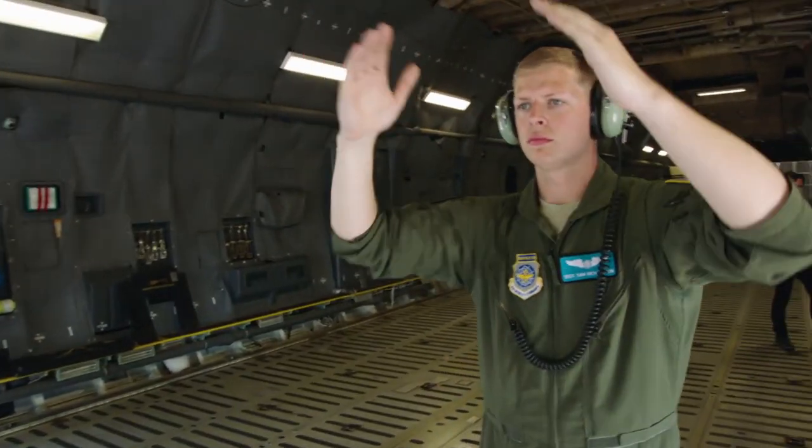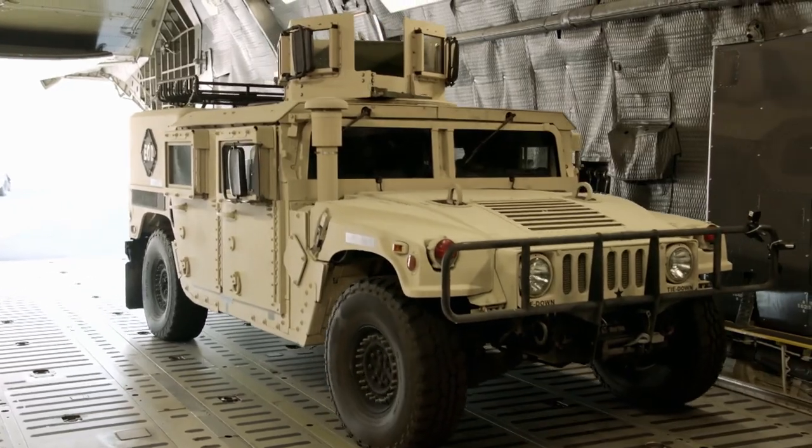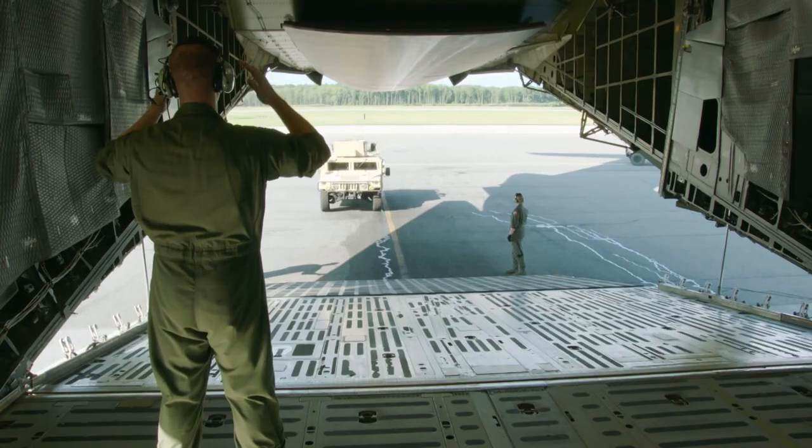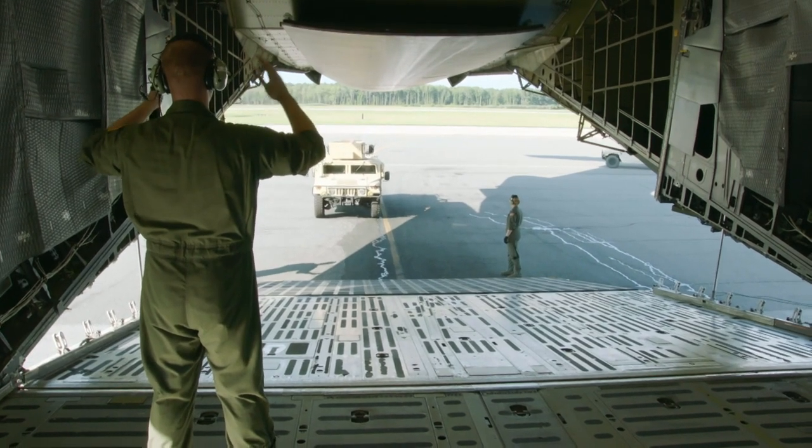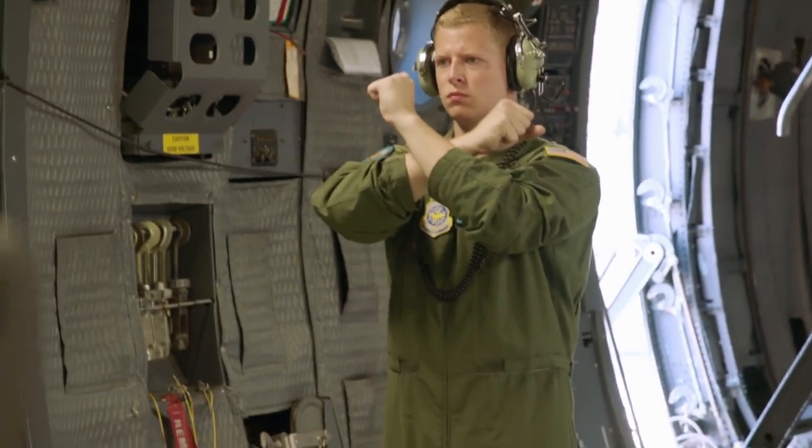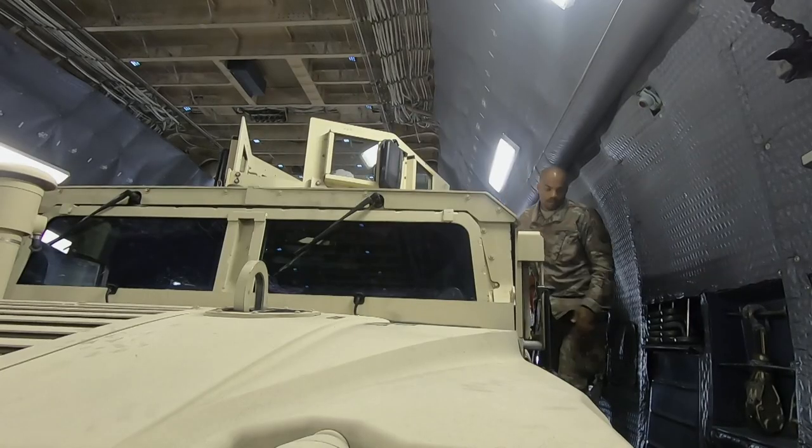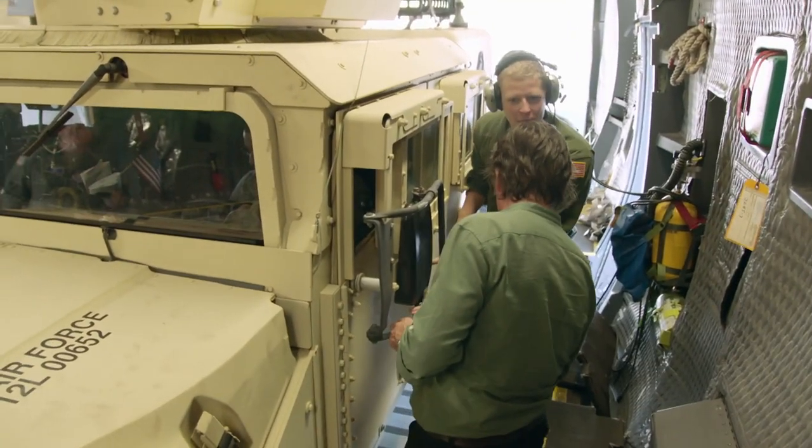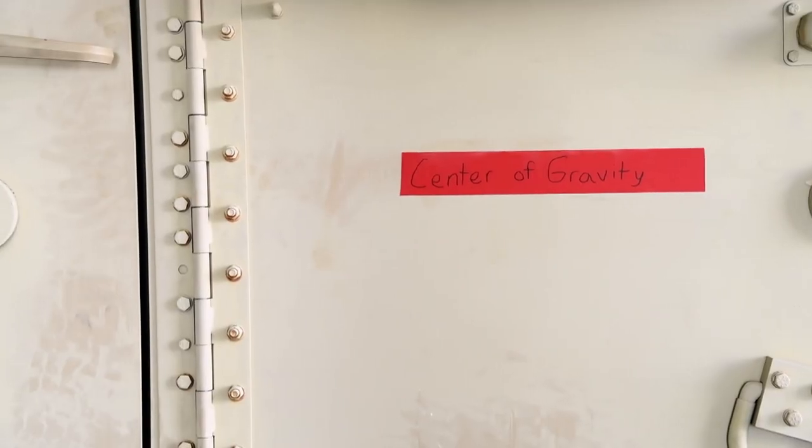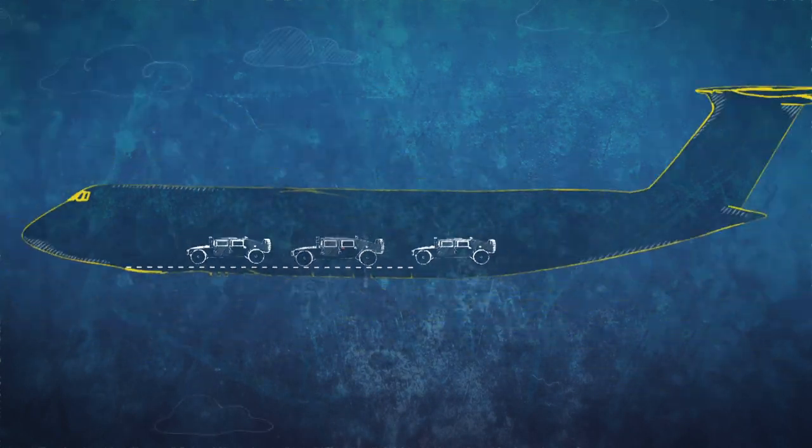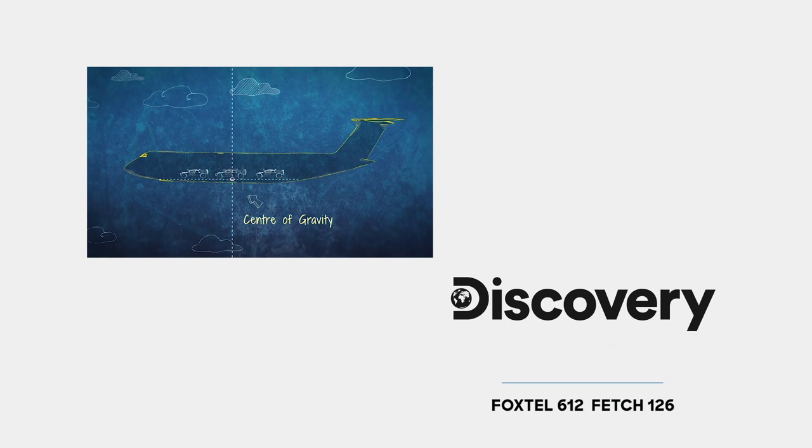23-year-old loadmaster Sam Richardson has already calculated where the centre of gravity is for all of these vehicles. Each has to be parked in a precise position, especially one vehicle. We have the centre of gravity on the actual vehicle itself. So let's go look at where it's at. Yeah. It's gonna be marked right here in the vehicle. So the load is balanced. The marker on the second Humvee must be lined up exactly with the plane's centre of gravity. That helps, eh?